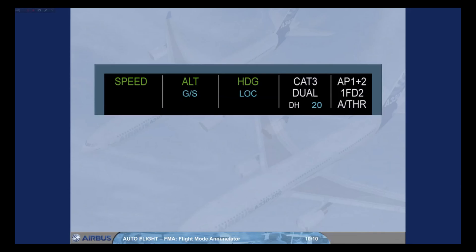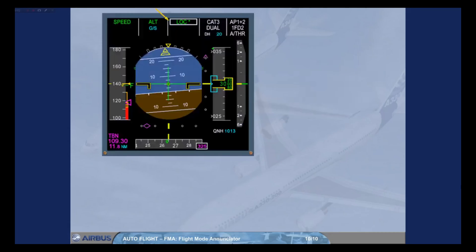When any mode changes on the FMA, it is boxed for a few seconds to draw the pilot's attention to this new status. In our example, the aircraft is intercepting the localizer. The star after the LOC indication means that the aircraft is in the capture phase. Once established on the localizer, the indication becomes LOC. Notice that the glideslope is still armed. We will be learning more and more about the FMA in the following modules, as we are constantly using it during all autopilot operations.